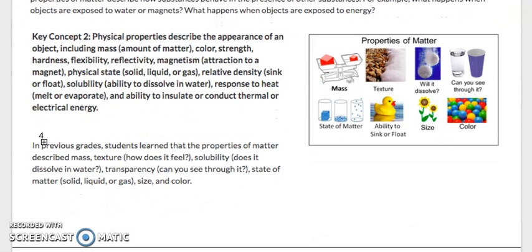Key concept number two. Physical properties describe the appearance of an object, including mass, the amount of matter, color, strength, hardness, flexibility, reflectivity, magnetism, attraction to a magnet, physical state which is solid, liquid, or gas, relative density, does it sink or float, solubility, the ability to dissolve in water, response to heat, does it melt or evaporate, and the ability to insulate or conduct thermal or electrical energy. This is a nice picture right here to let you understand some of the properties of matter.